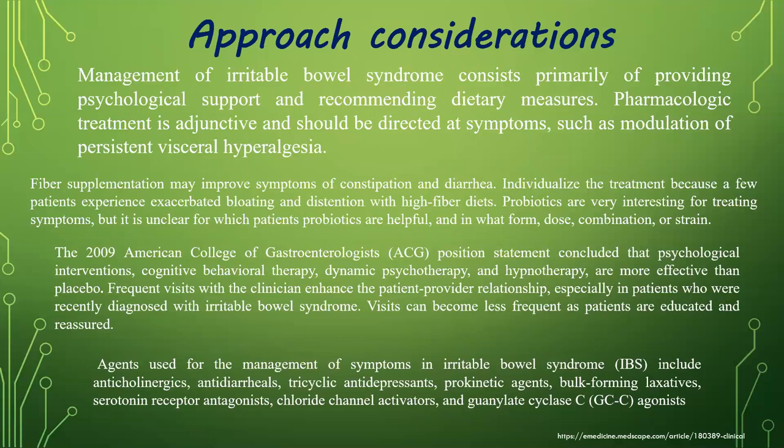Management of irritable bowel syndrome consists primarily of providing psychological support and recommending dietary measures. Pharmacologic treatment is adjunctive and should be directed at symptoms such as modulation of gut motility and visceral hyperalgesia. Fiber supplementation may improve symptoms of constipation and diarrhea, though treatment should be individualized as some patients experience exacerbated bloating with high-fiber diets. Probiotics are interesting for treating symptoms, but it is unclear for which patients they are helpful. The American College of Gastroenterology 2009 position statement concludes that psychological interventions — cognitive behavioral therapy, dynamic psychotherapy, and hypnotherapy — are more effective than placebo. Frequent visits with the clinician help build a relationship, especially in recently diagnosed patients; visits can become less frequent as patients are educated and reassured.